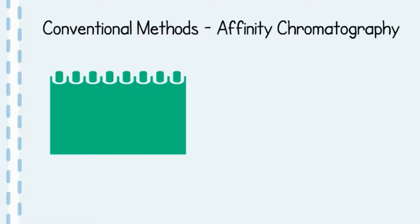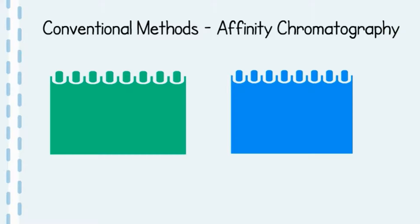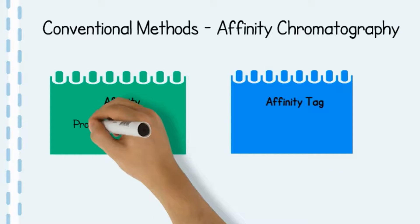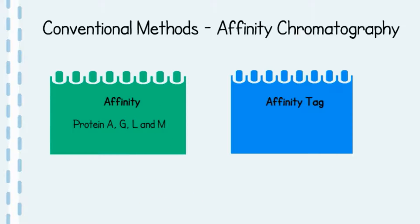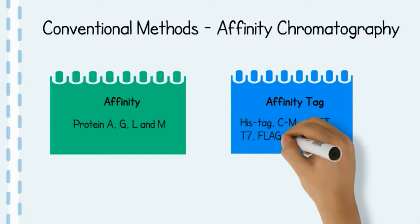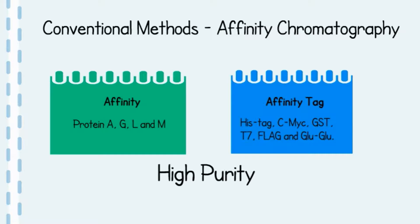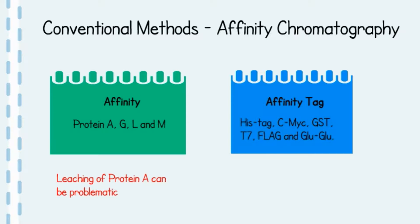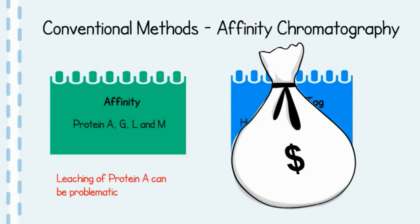We will now take a quick look at conventional antibody purification methods in use today, some of which include affinity and affinity tag-based purification methods. These include the use of bacterially derived proteins A, G, L and M, and his-tag, cMyc, T7, flag and glutamate glutamate tags. These methods provide high purity and high selectivity; however, problems such as leaching of protein A into the eluent and associated high costs are problematic.